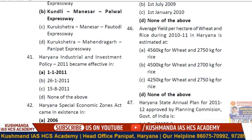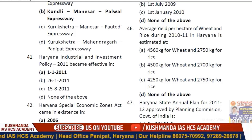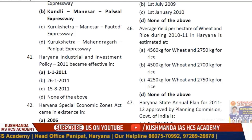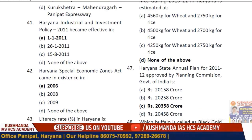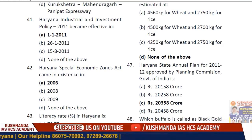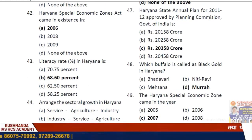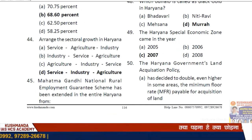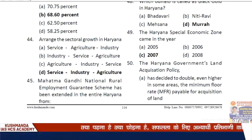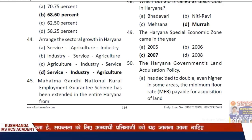Question 41: Haryana Industrial and Investment Policy 2011 became effective from 1st January 2011 — option A. Question 42: Special Economic Zone — Haryana Special Economic Zone Act 2006. Question 43: Literacy rate of Haryana is 68.60%. Question 44: In sectoral growth in Haryana, the service sector contributes the most, followed by industry, and agriculture contributes the least.